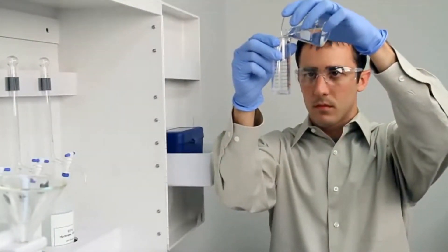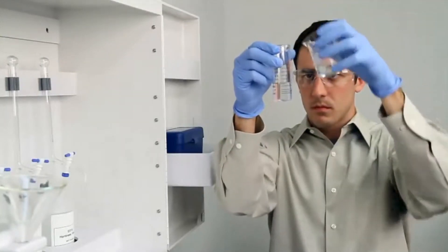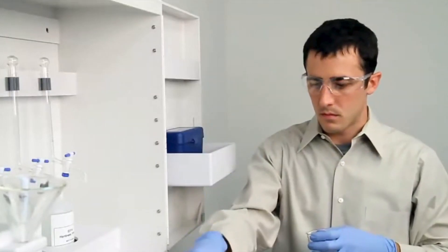To get an accurate sample size, you want to hold the vial close to eye level. Once you feel you have an accurate sample, place the vial on a level surface and bend down to eye level.